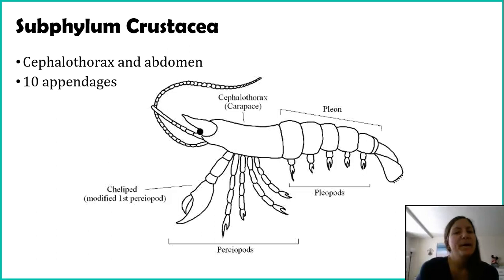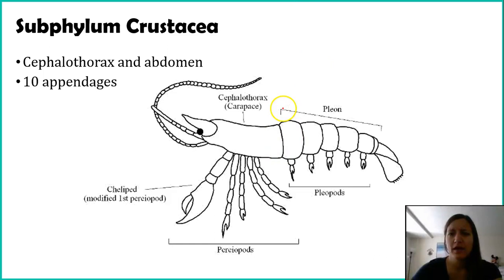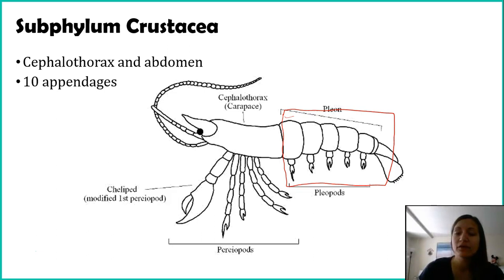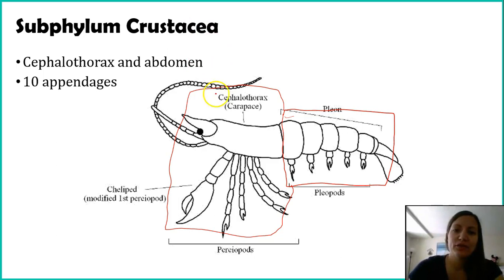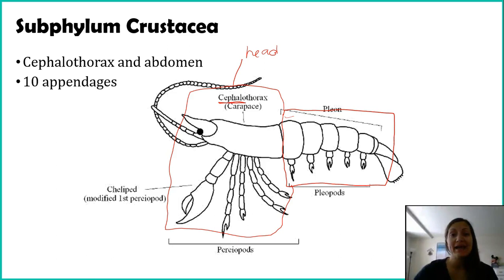What we see is, starting with the abdomen — which we've seen before — that's where quite a bit of the organs are found. The second segment, and there are only two segments, is something called the cephalothorax. 'Cephalo' means head — that's the Latin root — and then thorax. So it's essentially the head and thorax combined.